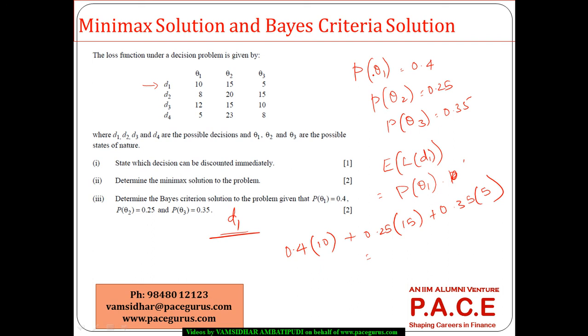So across all three decisions, whether going with a minimax solution or a Bayes criteria solution, we arrive at the same answer: D1 is the decision to be selected.